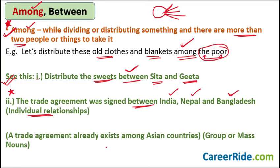'A trade agreement already exists among Asian countries' — here I'm using 'among' because this is a group of Asian countries, a mass noun. I'm not talking about individual countries at the moment. If you're confused, pause the video and take a good look at this slide, because this is really important. Make sure your concepts about 'among' in this sense are absolutely clear, otherwise there is a high chance you will commit a mistake.